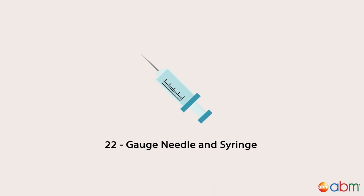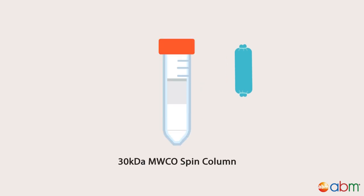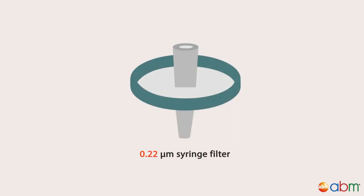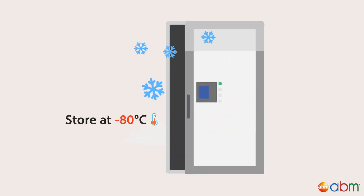To extract the virus band, use a 22-gauge needle and syringe. Pierce a hole at the top of the tube to release air pressure, then insert the needle 1 cm below the lower virus band. Carefully extract the intact virus with the bevel up. Transfer the virus particles to a 30 kDa MWCO spin column and concentrate to the desired volume. Filter the virus solution with a 0.22 µm syringe filter, add glycerol to a final concentration of 5%, mix thoroughly, aliquot, and store at minus 80 degrees Celsius.